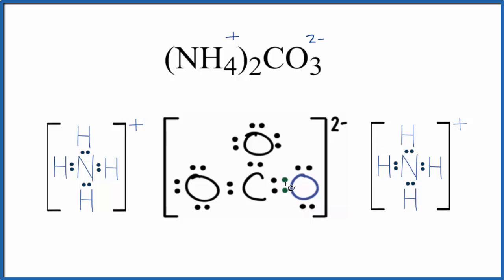For the carbonate ion, again we have electrons, pairs are shared, here's a double bond, in these covalent bonds. So this is the Lewis structure for the carbonate ion.